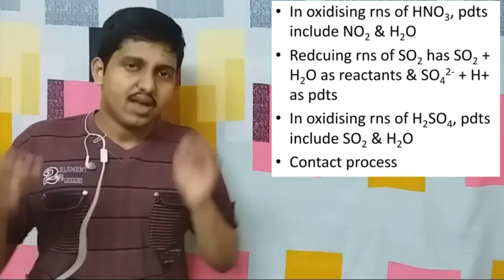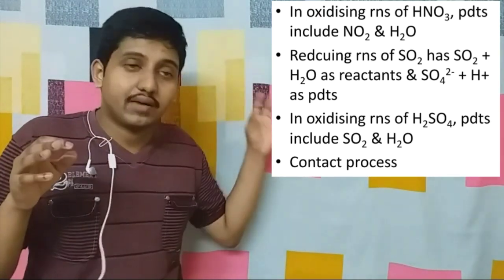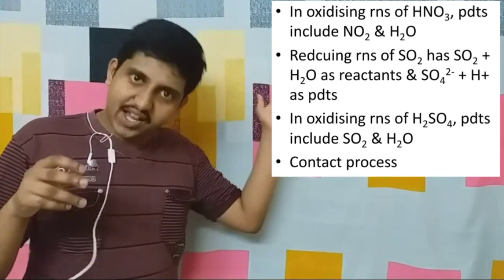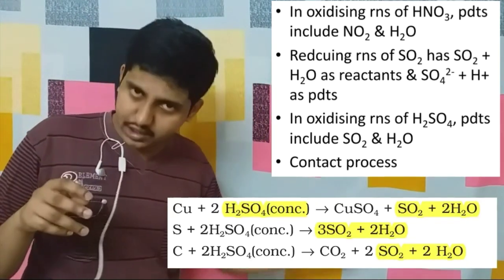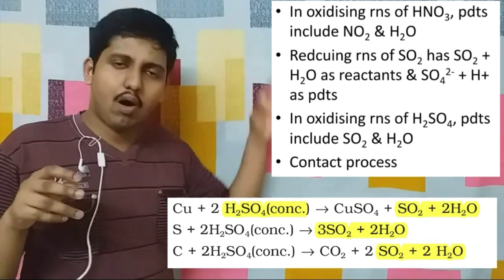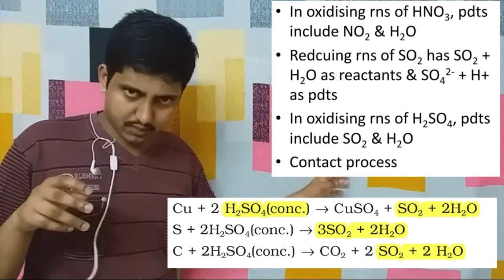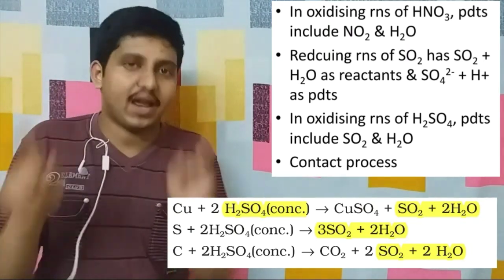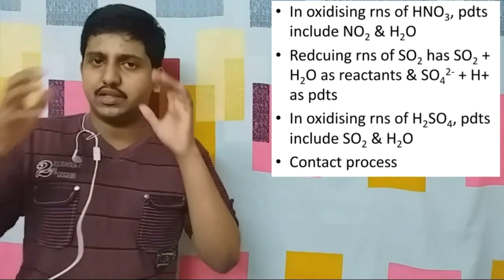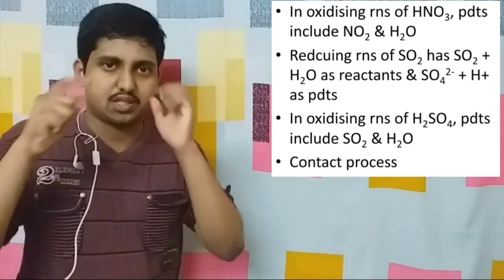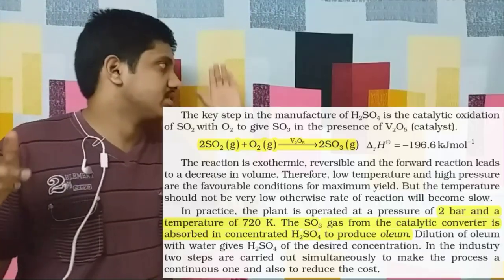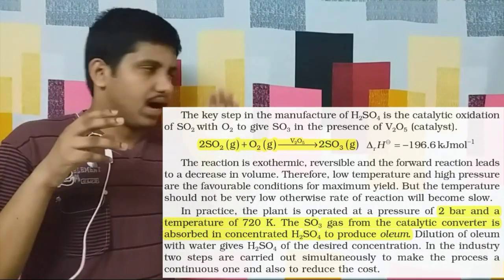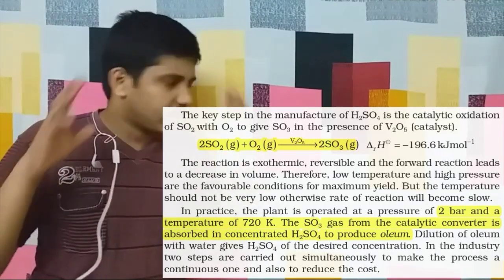The oxidizing reactions of sulfuric acid give SO2 and H2O — similar to how nitric acid gives NO2 and H2O. Finally, the contact process: the major reaction is SO2 plus O2 giving SO3 in the presence of V2O5 catalyst, and then the further reactions. That reaction is very important.